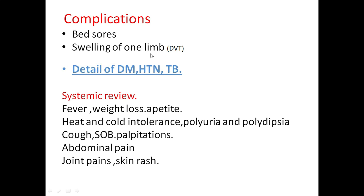Now is the time to ask about diabetes, hypertension, and past history of TB — take a detailed history of these at this time. Then comes the systemic review. Ask general questions: fever, weight loss, appetite, heat and cold intolerance regarding thyroid — important because it is related with periodic paralysis. Ask about polyuria and polydipsia, cough, shortness of breath, palpitations, and abdominal pain, which will rule out acute intermittent porphyria.